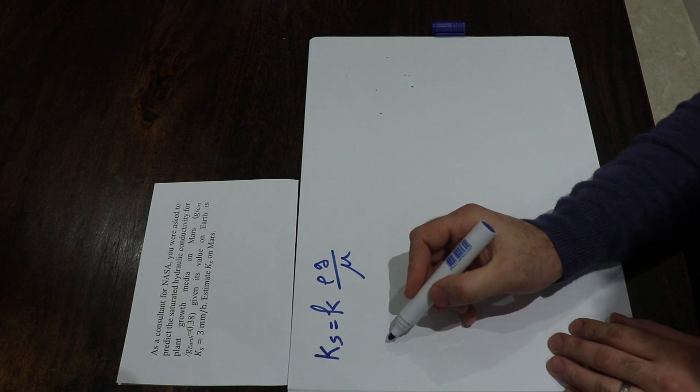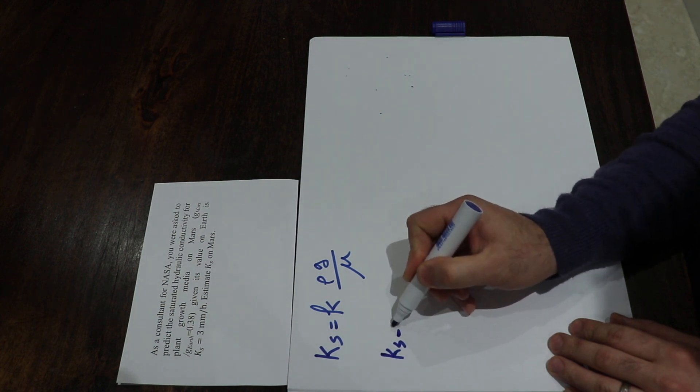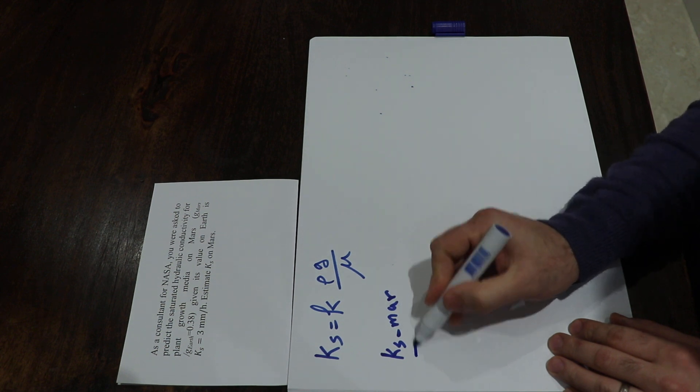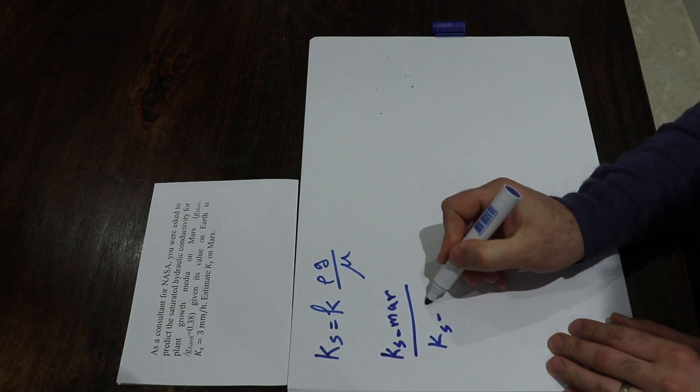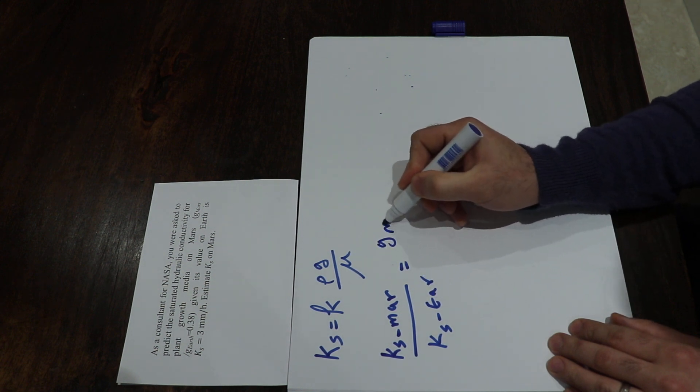So if you write Ks Mars divided by Ks Earth, that will be equal to G Mars divided by G Earth.